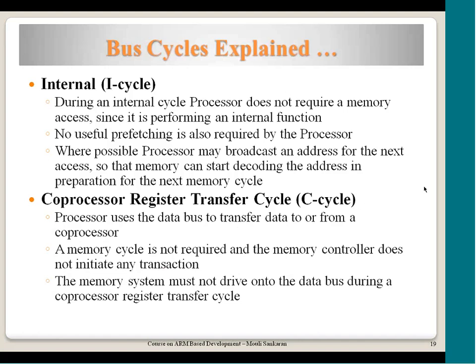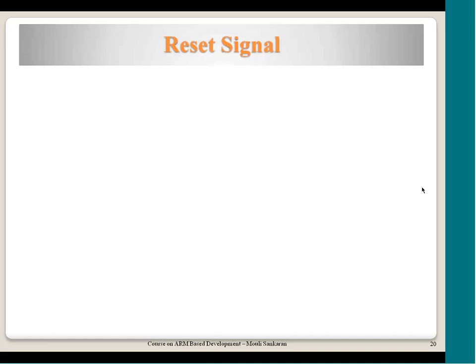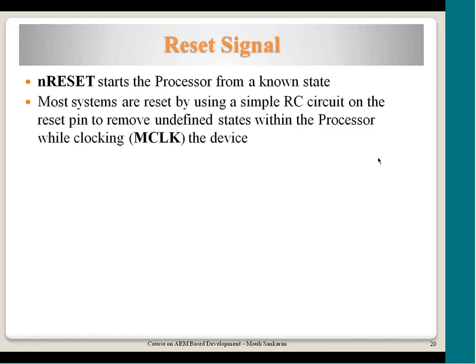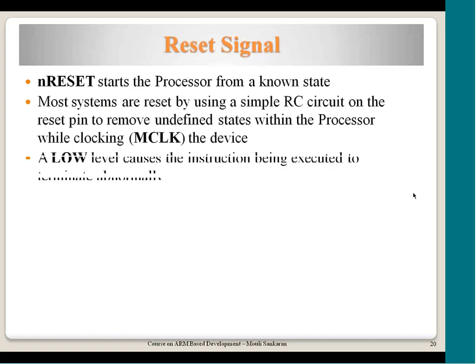Now let us look at the reset signal. The nRESET signal, when low, activates reset — a low level causes the currently executing instruction to terminate abnormally. When a running processor suddenly receives a reset, whatever instruction execution is happening must be terminated and the processor must start from a known state. This applies both when the development board is running and someone issues a reset, and when the system powers on for the first time. Whatever the situation, the ARM core needs to start from a known state.